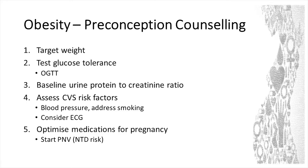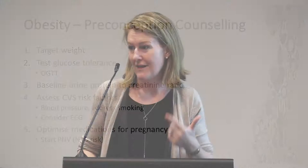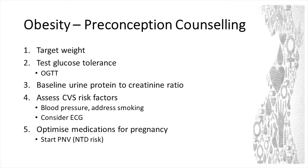I do look at their glucose tolerance test prior to conception if I can. I like doing a urine protein-creatinine ratio as a baseline — that's useful for a couple of reasons. Women who are obese have a higher risk of proteinuria. It's helpful to clarify their preeclampsia risk, and it's also really helpful when I look to diagnose preeclampsia later on, because it's very helpful to know whether their proteinuria is new or old. Then I look at cardiovascular risks and their medications for pregnancy.